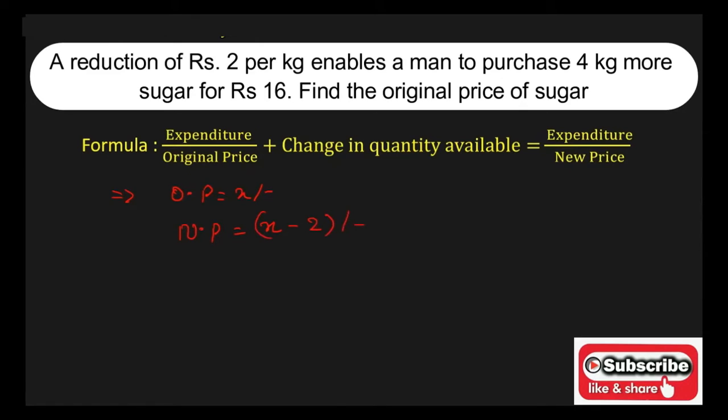Now, the new price is equal to X minus Rs.2. The change in quantity will be the purchase of 4 kg more sugar. That is nothing but change in quantity is equal to 4 kg.